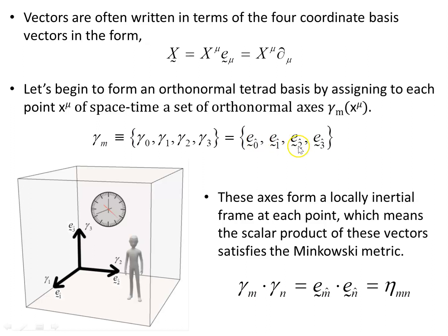The hats indicate unit magnitude and mutual orthogonality. These axes form a local inertial frame at each point, which means the scalar product of these vectors satisfies the Minkowski metric. So the scalar product of gamma_m with gamma_n is just the Minkowski metric eta_mn, because they are orthonormal.